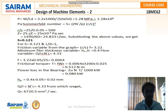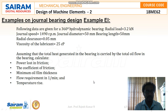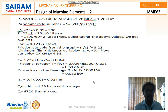Power loss in the bearing using the formula 2π × N' × T / 1000 kilowatts gives 0.080 kW. Minimum oil film thickness: h₀ = 0.4 × 0.05 = 0.02 mm. From the flow variable Q / (r·c·N'·l) = 4.33, we get Q = 6720.5 mm³/s. The temperature rise calculation will be continued in the next video. Thank you.